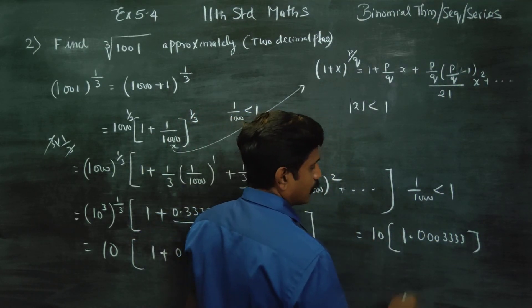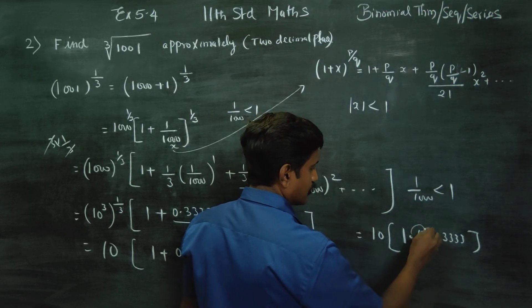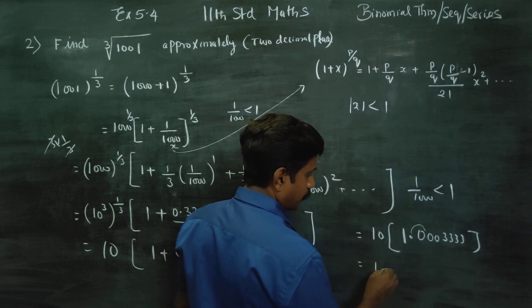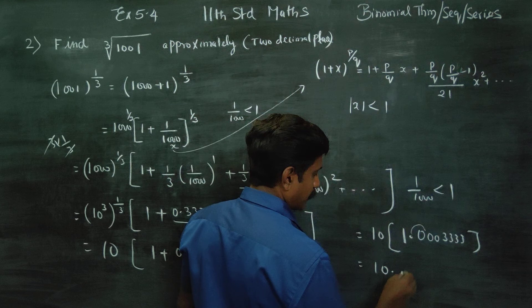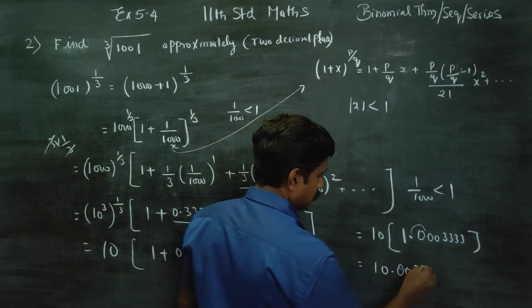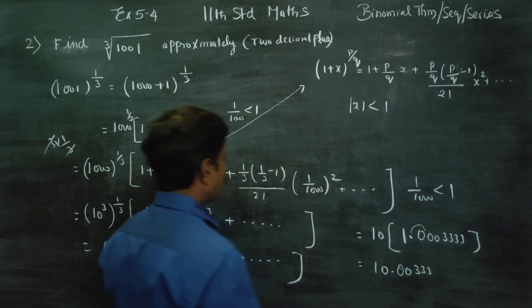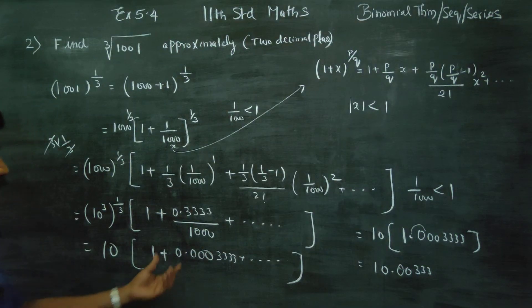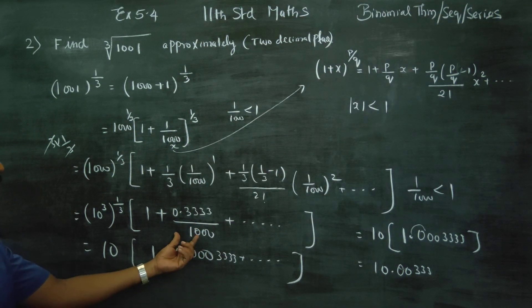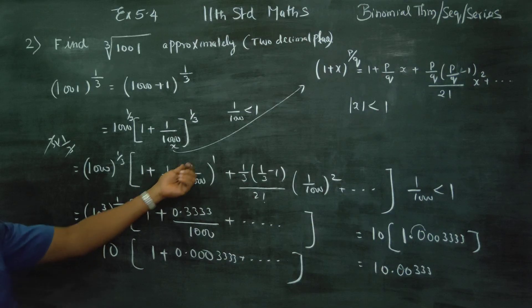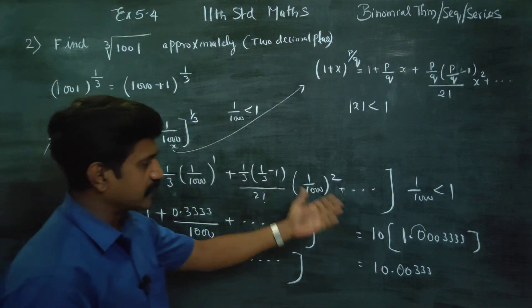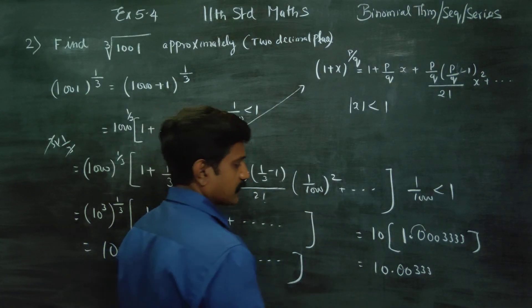10 is equal to 1 digit. Then, 10.00333 goes on. You can cancel the power. I am just stopping with this.